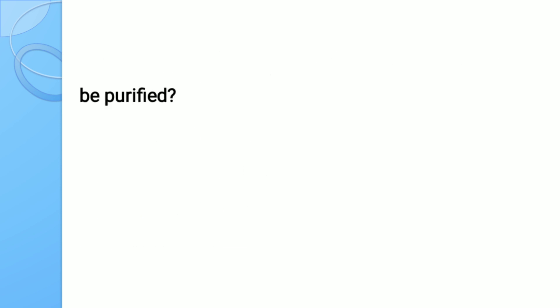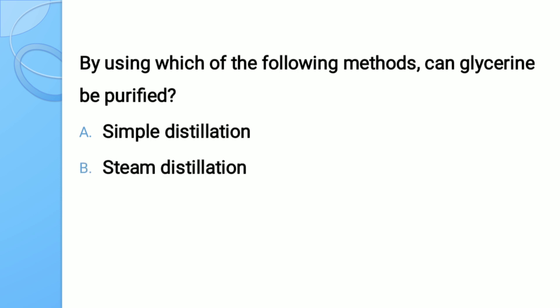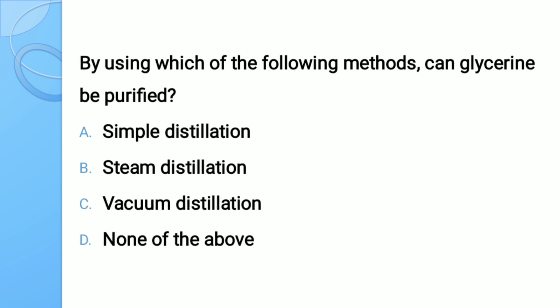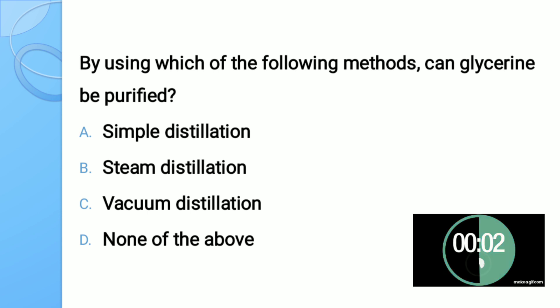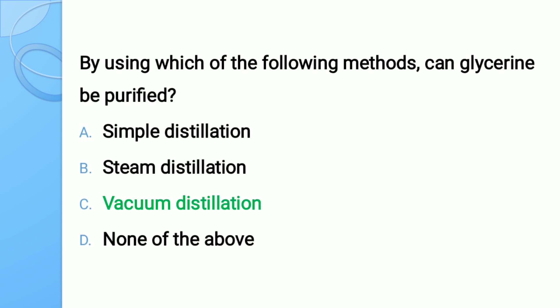Question number nine: By using which of the following method can glycerin be purified? Options: A) simple distillation, B) steam distillation, C) vacuum distillation, D) none of the above. The correct answer is vacuum distillation — vacuum distillation can be used for purification of glycerin.